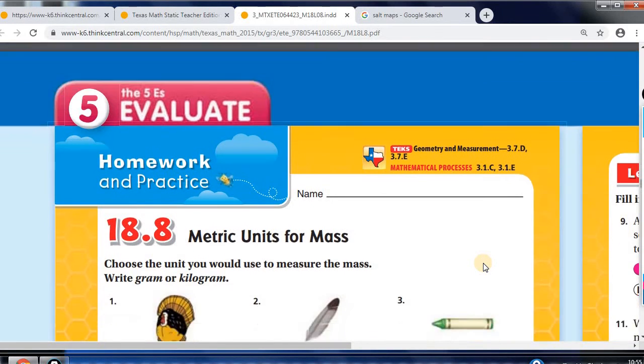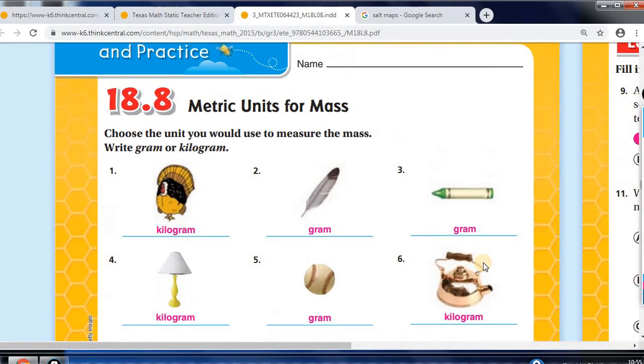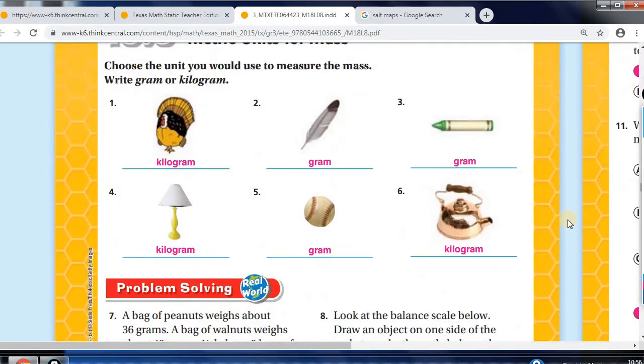So let's take a look at your homework and practice. Now we're looking at what unit we'd use to measure the mass. So for the turkey, it'd be the kilogram. Of course, for the feather, it'd be gram. Crayon would be gram. The lamp would be kilogram. The baseball would be grams. And this teapot would be kilograms. So you're getting the idea of the larger the object, use kilograms. The smaller the object, it'll be the gram. That's what we want for you to be able to see.